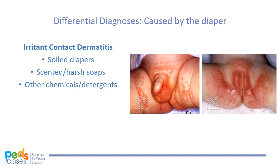Irritant contact dermatitis presents as patches on convex surfaces, sparing inguinal creases. The fact that the rash spares a fold is key to differentiating it from other diaper rashes. The skin in the folds is protected from direct contact with the diaper and gets less irritation than the skin that is rubbing directly against the diaper.